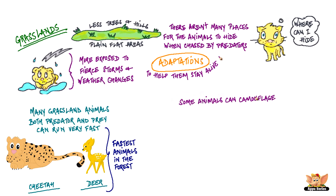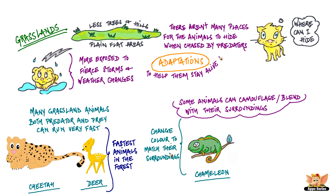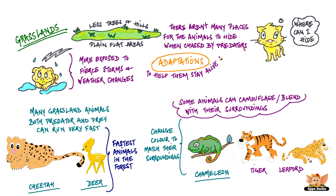Some animals can camouflage, that is, blend with their surroundings. Certain species of reptiles like the chameleon can change their color to match their surroundings. Animals like tiger and leopard have patterns on their body that make them difficult to spot when they are hiding in the grass.